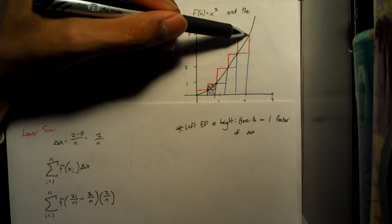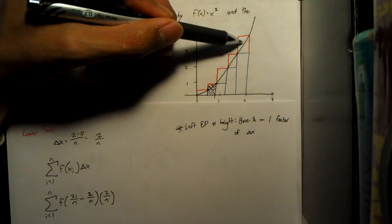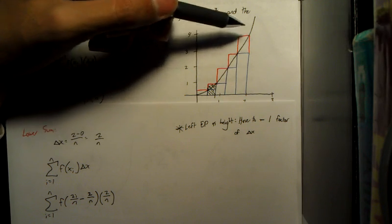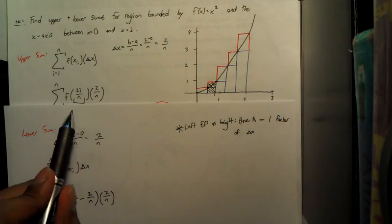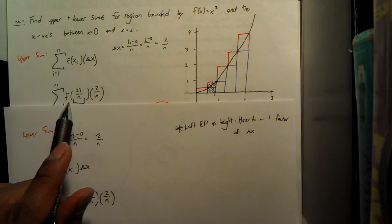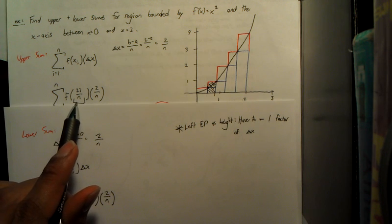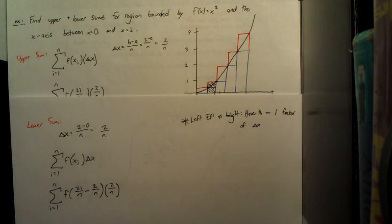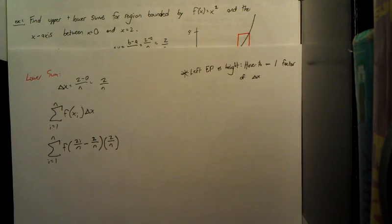Whenever you have a right endpoint as the height, as with the upper sum in this rectangle, then you can just do it as we did with the upper sum and just do your change of x times i.